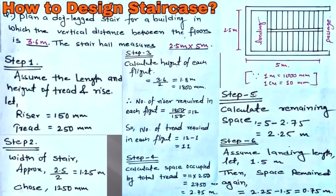Step 5: Calculate remaining space. Remaining space equals 5 minus 2.75, which equals 2.25 meters. Step 6: Assume landing length or width as 1.5 meters. This landing width allows people to rest after one flight, helping to avoid fatigue during vertical transportation for those who cannot easily climb all steps to reach the next floor.